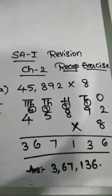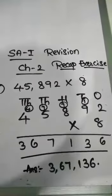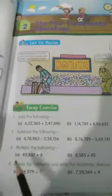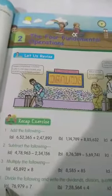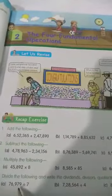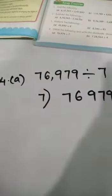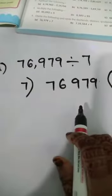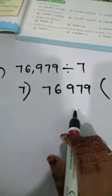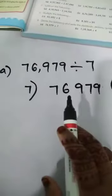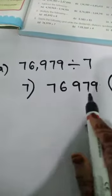So this is essay 1 revision. Let us do the fourth bit. Fourth bit: divide the following and write the dividend, divisor, quotient, and remainder. Here is the first question: 76,979 divided by 7. So fourth bit, first problem — here we have to divide the following and write the dividend, divisor, quotient, and remainder.